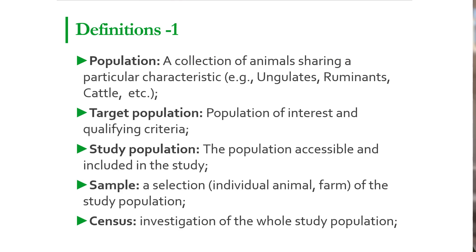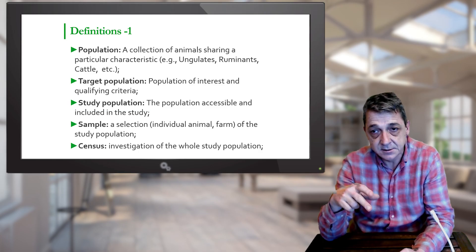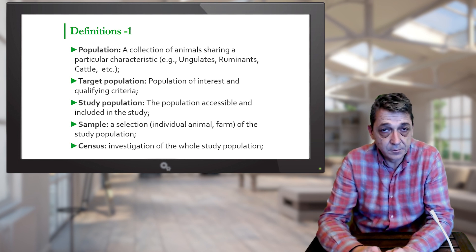Let's start with some definitions. Population is a collection of units, or in our case animals, that have some particular characteristics in common. This characteristic in common could vary from disease to disease. For example, in the case of rabies, the characteristic is whether the animals could harbor and transmit the disease. In this case, the population would be the whole animal population of the country, including humans.